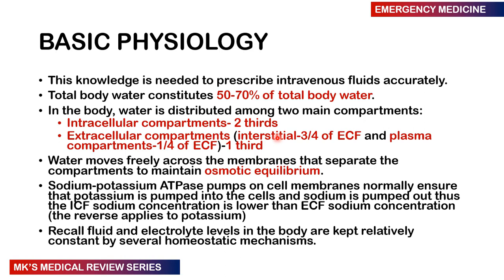Total body water is divided into two compartments: an intracellular compartment, which makes up two-thirds of total body water, and an extracellular compartment, which makes up one-third. The extracellular compartment can be divided into the interstitium — water between cells — accounting for three-quarters of extracellular fluid, and the plasma, which consists of one-quarter of extracellular fluid and makes up the fluid component of blood. Water moves across these membranes via osmosis to maintain equilibrium, driven by hydrostatic pressure and osmotic pressure.